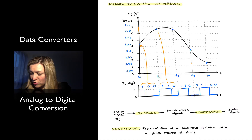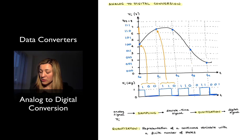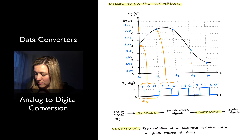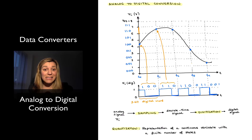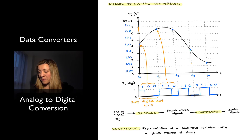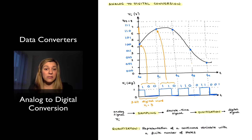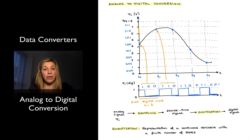Each one of these sampling instances is referred to as a digital word — in this case a 3-bit digital word. When we refer to the number of bits as n, we say n equals 3, or this is a 3-bit system. Each individual component of the digital word — either a 1 or a 0 — is referred to as a bit or binary digit, and a group of three will comprise a binary word.